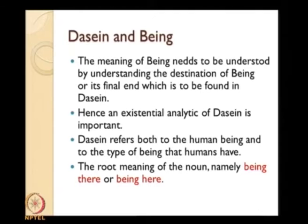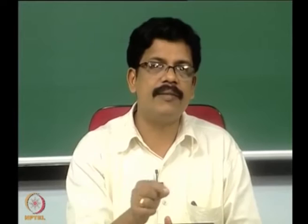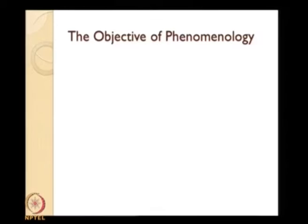The root meaning of Dasein is 'being there' or 'being here,' which means being-in-the-world. For Heidegger, the being of man is not an abstract entity located in a transcendental domain like the transcendental subjectivity of Husserl. It is a being which needs to be essentially located in the world, among other beings and other entities.